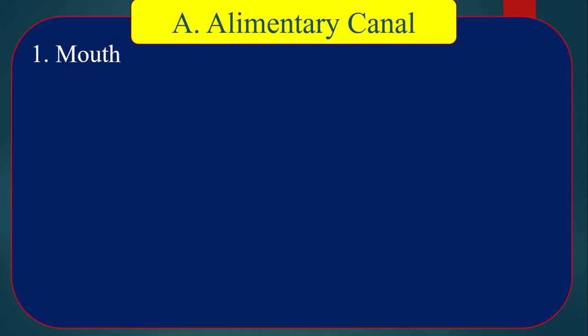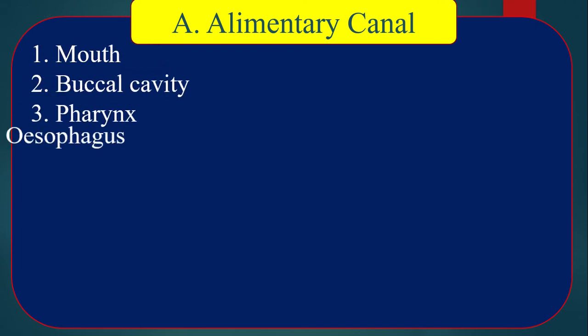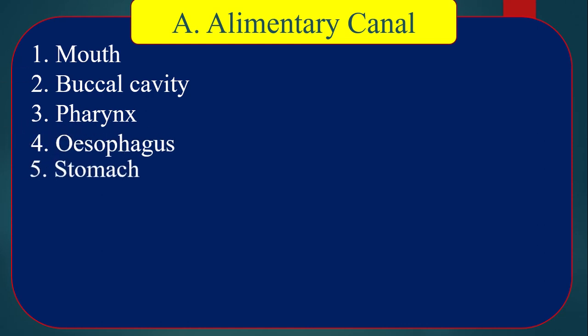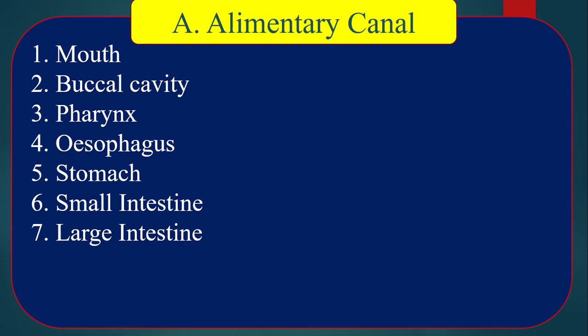The alimentary canal consists of: number one, mouth; number two, buccal cavity; number three, pharynx; number four, esophagus; number five, stomach; number six, small intestine; number seven, large intestine; and number eight, anus.